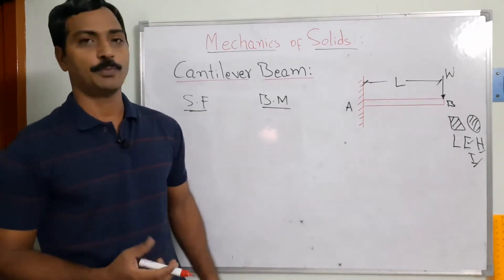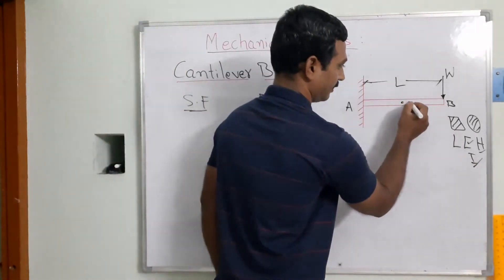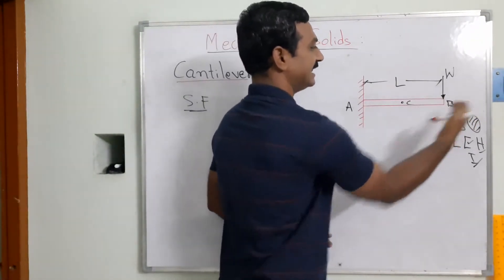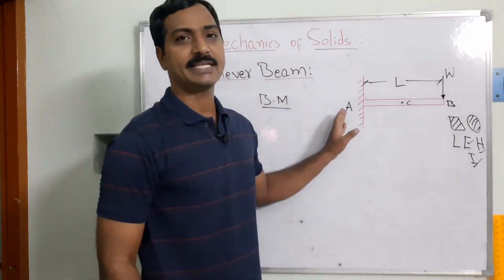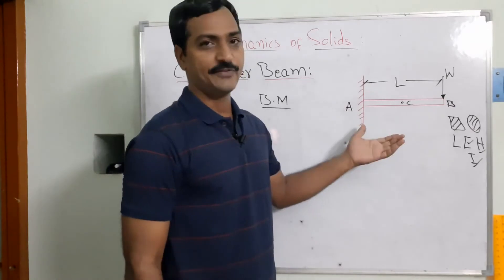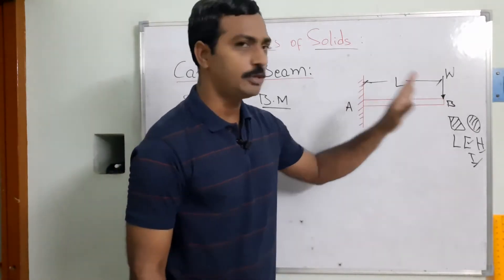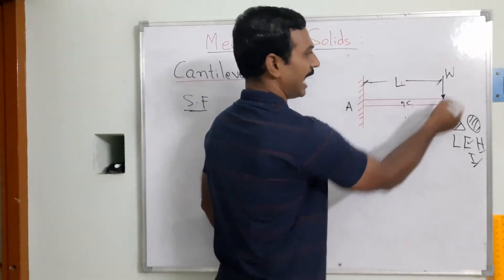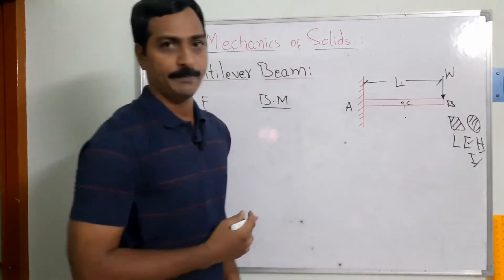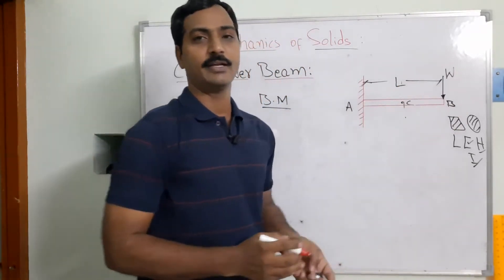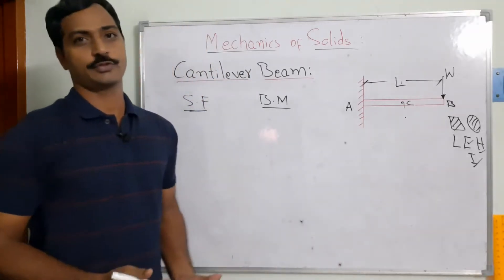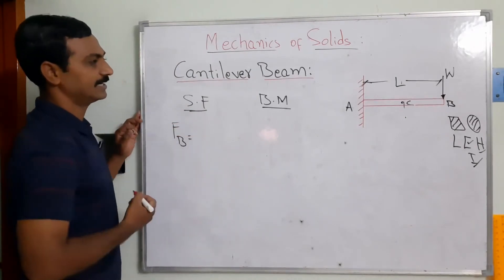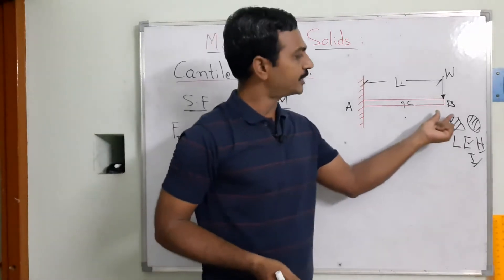Consider point C on the beam. Towards B is the right side and towards A is the left side. The algebraic sum of forces to the right side gives the shear force at that section. Now we find the shear force at B by considering only the forces to the right side of B.